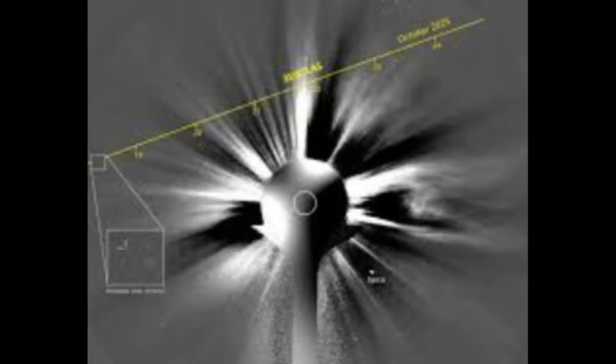Contrary to widespread reports, we can see 3I Atlas from Earth currently, so this will be a legitimate acid test of the spaceship hypothesis.